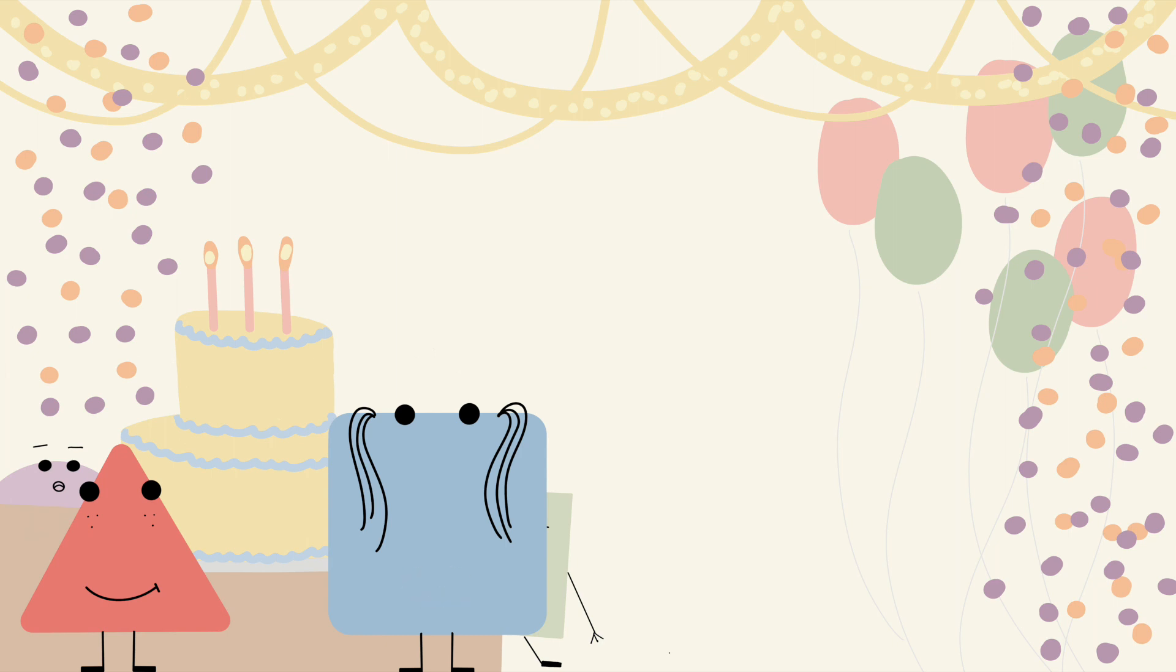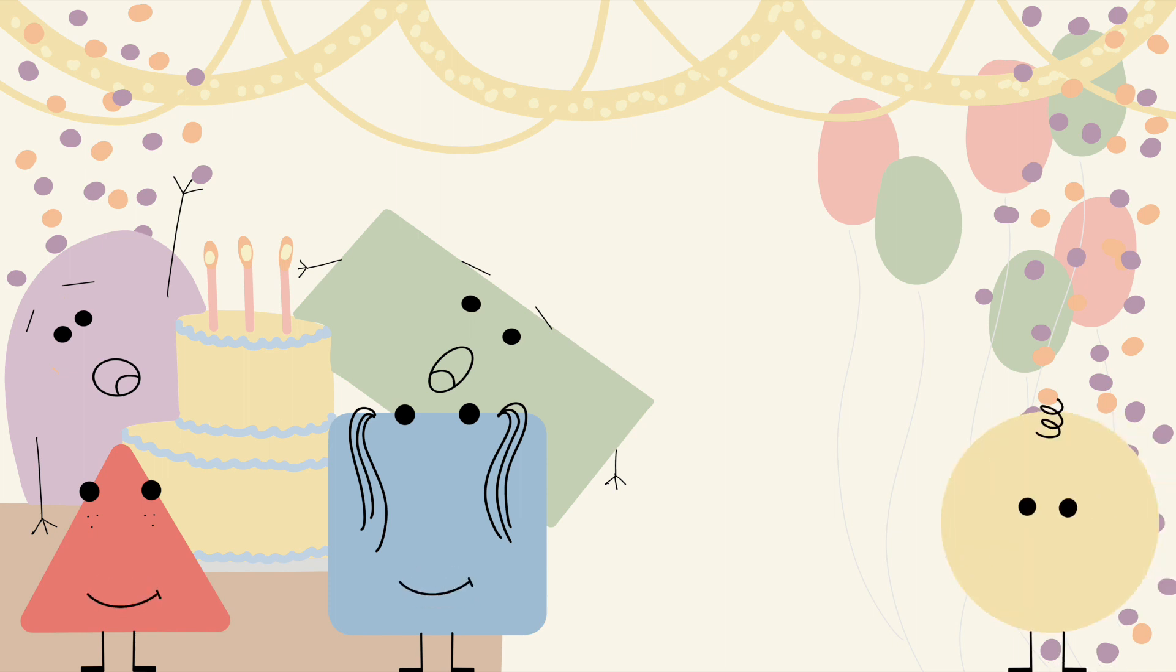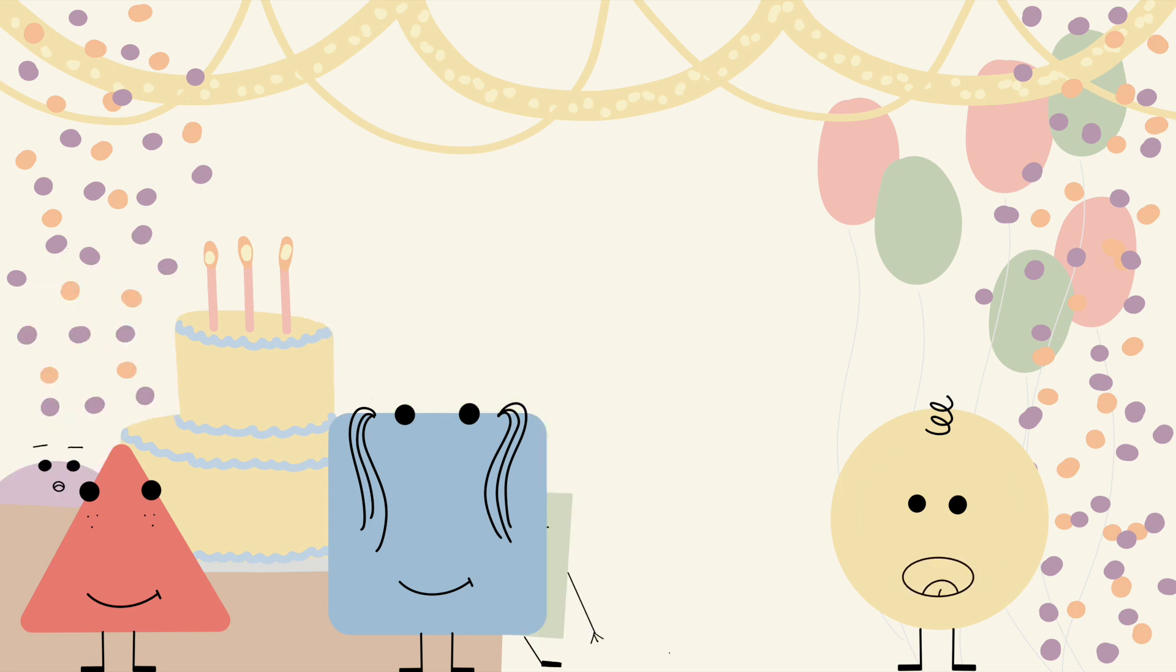Circle will be here any minute. When he gets here, remember to say, Surprise! Ready? Here he comes. Surprise! Oh my goodness! A surprise party? Look at all the decorations. And the big birthday cake looks delicious. It's my favorite color. Yellow! Thank you so much for the surprise party, Asher. I am so happy.